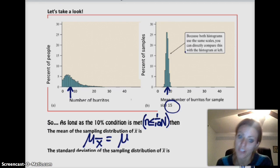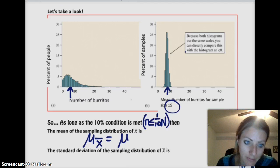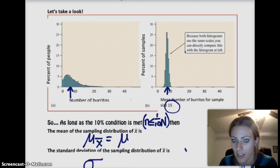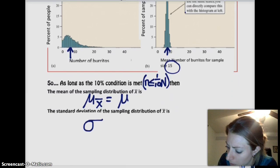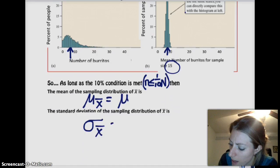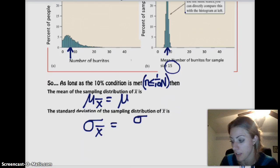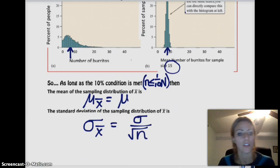So if we have our 10% condition, then we can get a certain amount of information. So the mean of our sampling distribution, as long as our 10% condition is met, is mu sub x-bar, which is going to end up being the same as the mean of the population. So the true mean number of burritos that Dawson can eat. Additionally, your standard deviation of the sampling distribution of x-bar is sigma sub x-bar, because it's the standard deviation of the sample means. And that's going to be equal to the true standard deviation of the population divided by the square root of n.